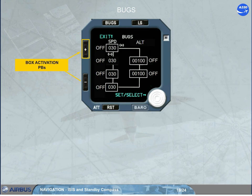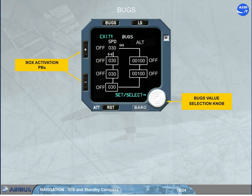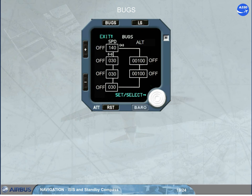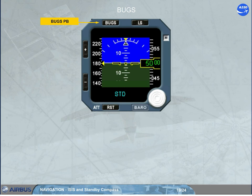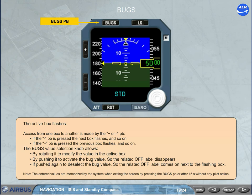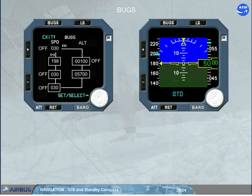The BUGS value selection knob allows, by rotating it, to modify the value in the active box, and by pushing it, to activate the bug value — so the related OFF label disappears. If pushed again, the bug value is deselected and the related OFF label comes on next to the flashing box. Note: the entered values are memorized by the system when exiting the screen by pressing the BUGS push button, or after 15 seconds without any pilot action.